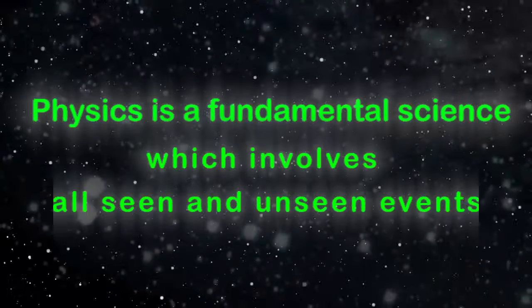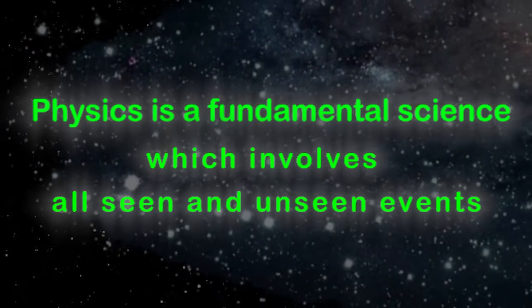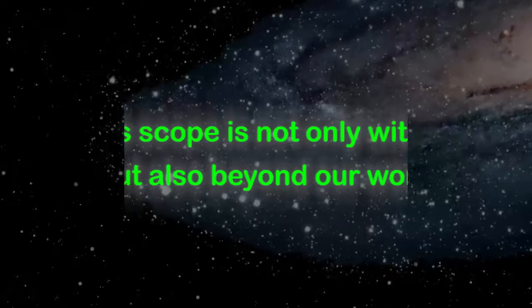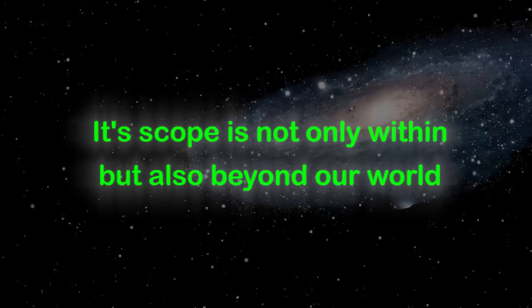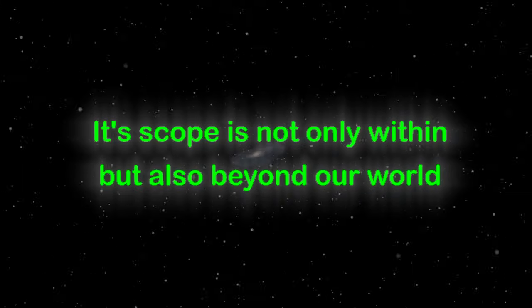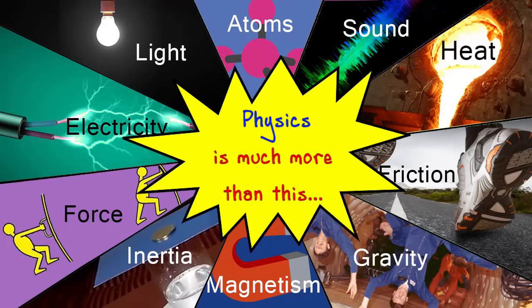For each of the previously mentioned examples, there are other events occurring at the same time which are invisible or which we haven't considered — physics explains all these unseen events too. Its goal is to answer all questions, right from elemental particles like atoms to gigantic structures like planets. It gives us an understanding of how and why things are the way they are. The events mentioned earlier were just minute examples of how physics is involved in our everyday lives.